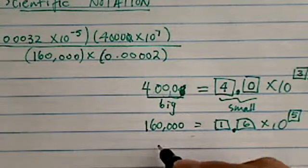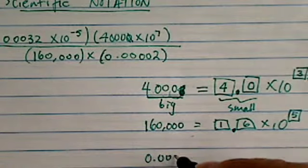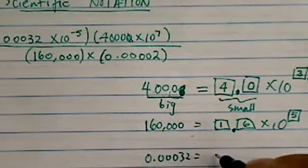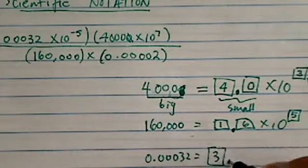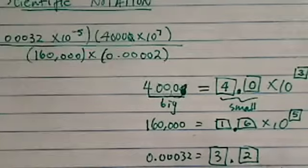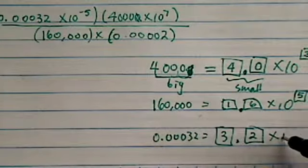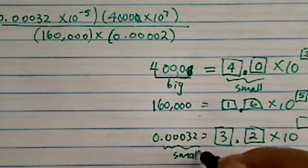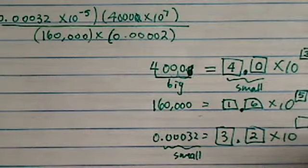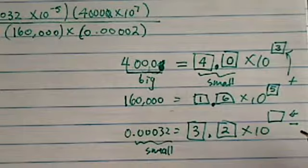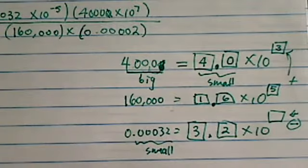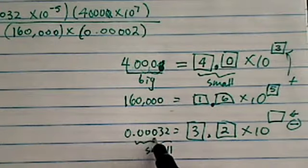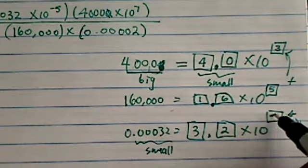Let's go on, zero point zero zero zero zero three two. I'm going to make this one into three point two. And then since I started with a small number, I should have a negative. The exponent should be negative here. I have one, two, three, four, so it's negative four.